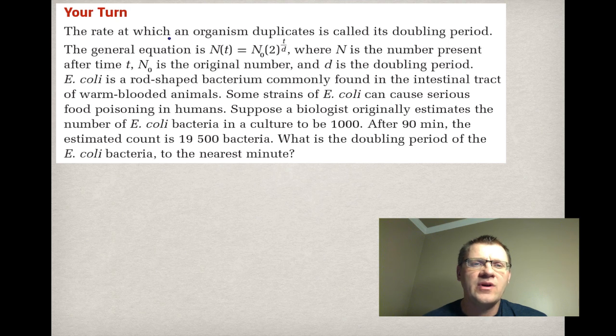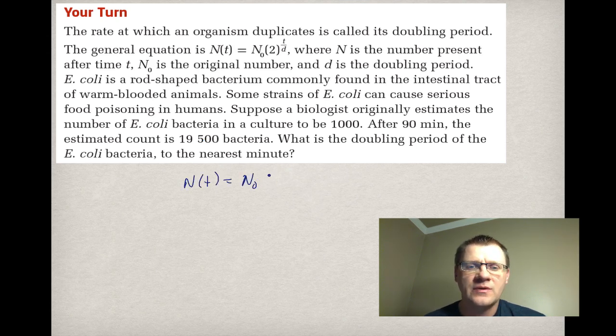Our last example. It says the rate at which an organism duplicates is called its doubling period. The general equation is N(t) = N₀·2^(t/D), where N is the number present after time t. N₀ is the original number, and D is a doubling period. E. coli is a rod-shaped bacterium commonly found in the intestinal tract of warm-blooded animals. Some strains of E. coli can cause serious food poisoning in humans. Suppose a biologist originally estimates the number of E. coli bacteria in a culture to be 1,000. After 90 minutes, the estimated count is 19,500 bacteria. What is the doubling period of E. coli bacteria to the nearest minute?